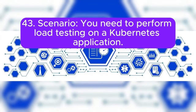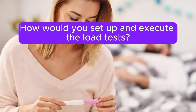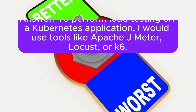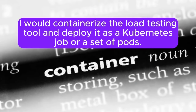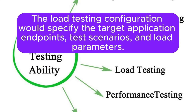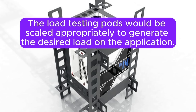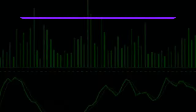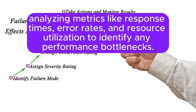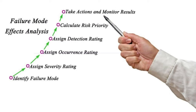Scenario 43: You need to perform load testing on a Kubernetes application. How would you set up and execute the load tests? Answer: To perform load testing on a Kubernetes application, I would use tools like Apache JMeter, Locust, or K6. I would containerize the load testing tool and deploy it as a Kubernetes job or a set of pods. The load testing configuration would specify the target application endpoints, test scenarios, and load parameters. The load testing pods would be scaled appropriately to generate the desired load on the application. During the test, I would monitor the application's performance using Prometheus and Grafana, analyzing metrics like response times, error rates, and resource utilization to identify performance bottlenecks.